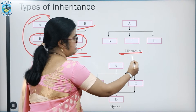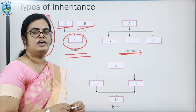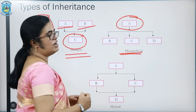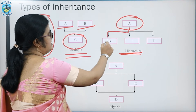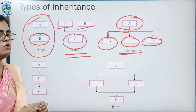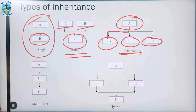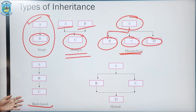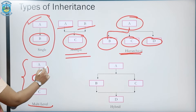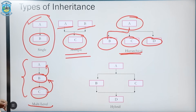Then we come to hierarchical inheritance. In hierarchical inheritance, we would have a hierarchy of classes that are going to be derived. As you see in this example, we have class A as the base class, and in the second level of hierarchy we have class B, class C, and class D. The next type is known as multi-level inheritance. In multi-level inheritance, there are multiple levels in which classes are derived. Here class B is derived from class A, and class C is further derived from class B.